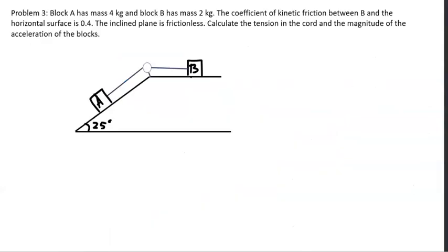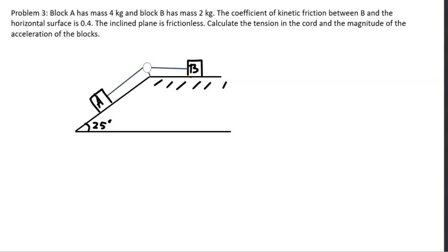Problem 3. Block A has a mass of 4 kilograms and block B has a mass of 2 kilograms. The coefficient of kinetic friction between B and the horizontal surface is 0.4 — friction exists only on the horizontal surface; the inclined plane has no friction. Calculate the tension in the chord and the magnitude of acceleration of the system. They share the same acceleration and tension since it's a single string over a massless pulley.